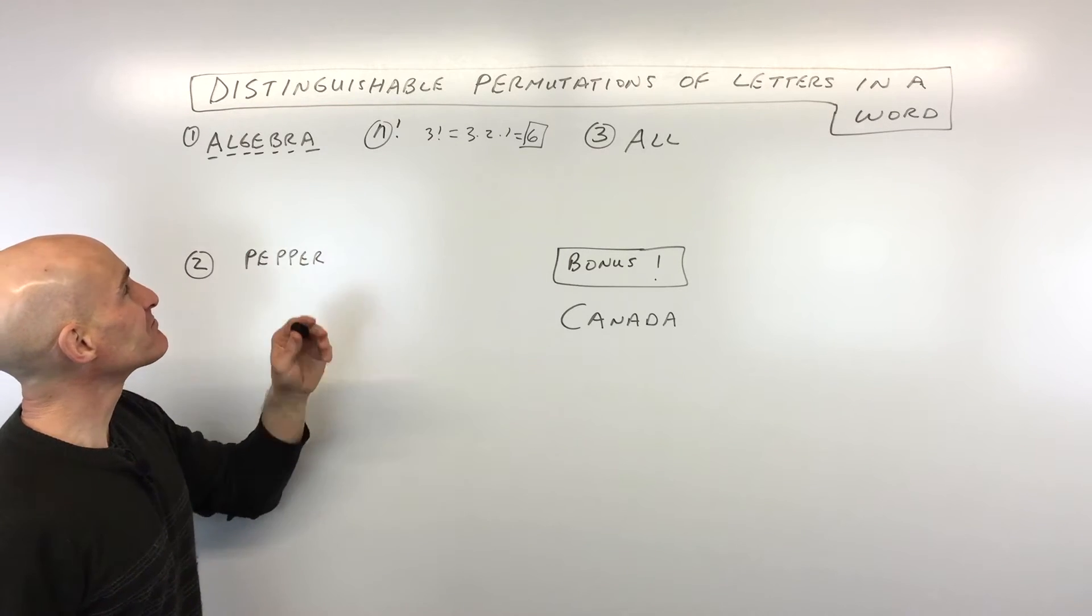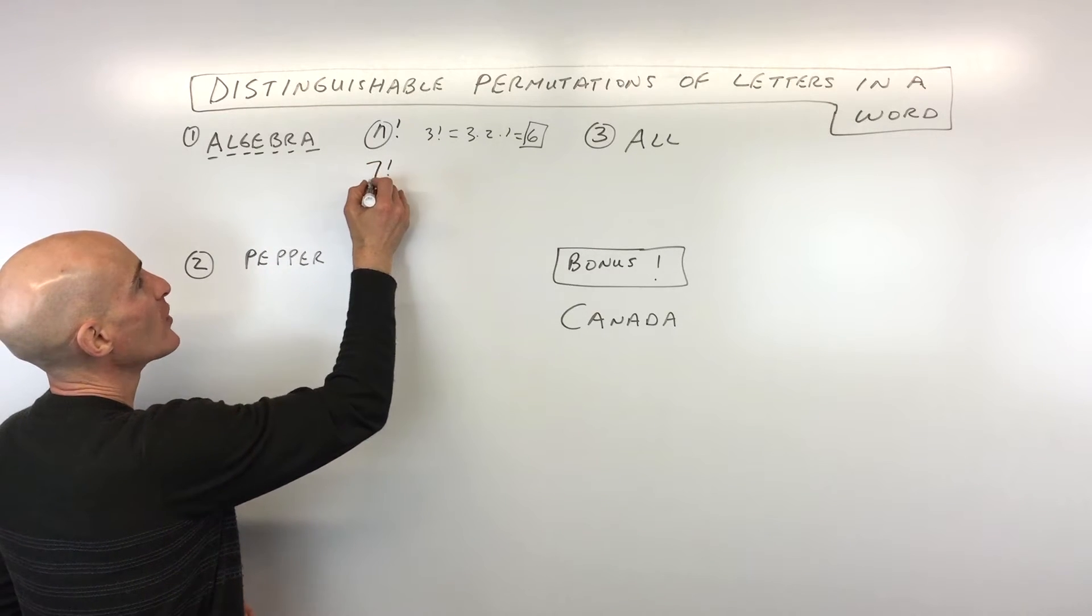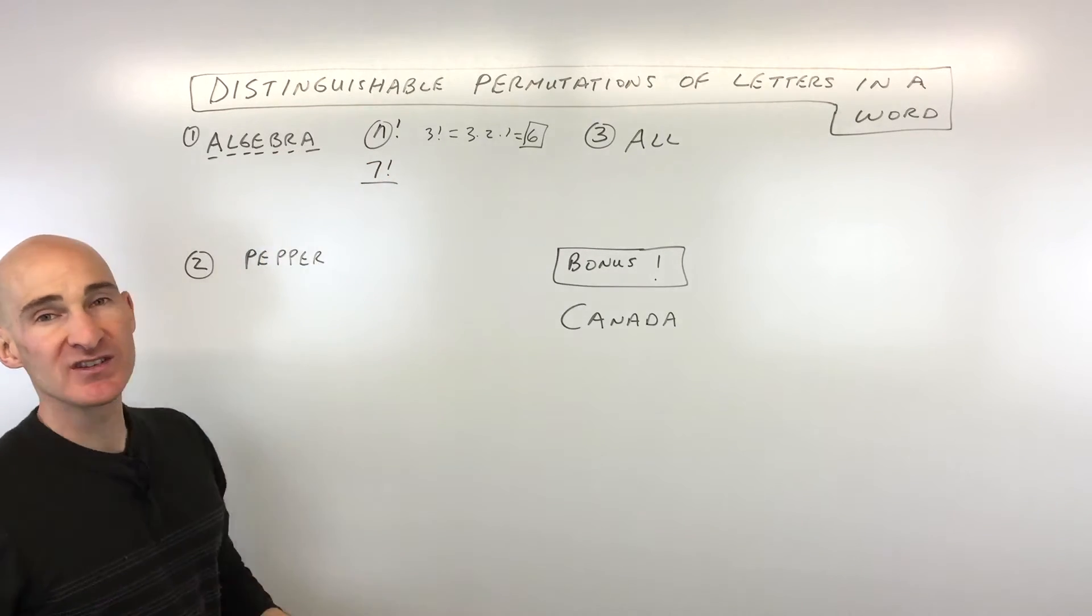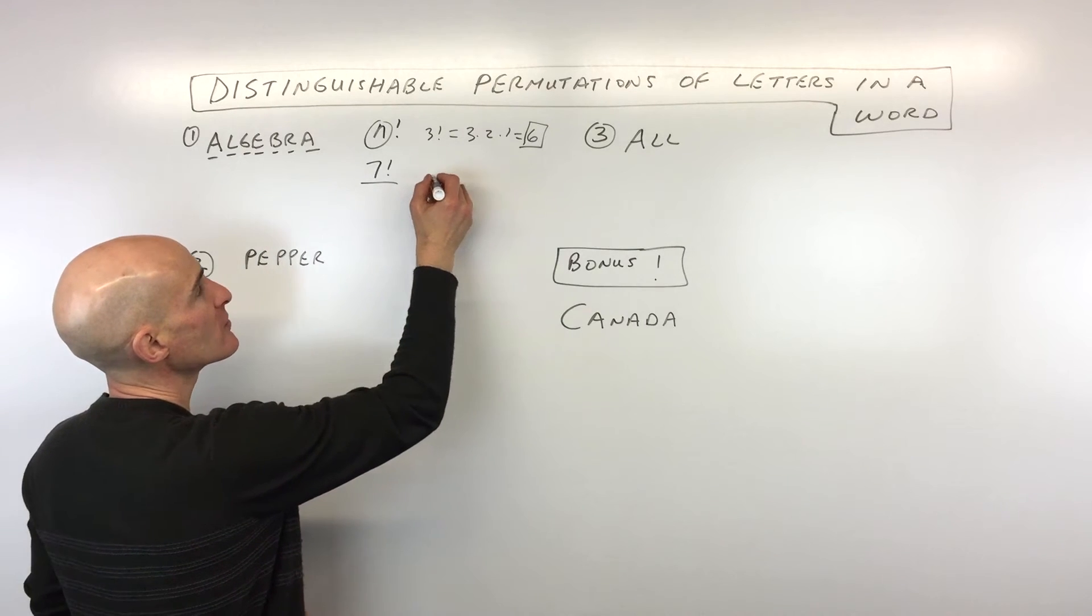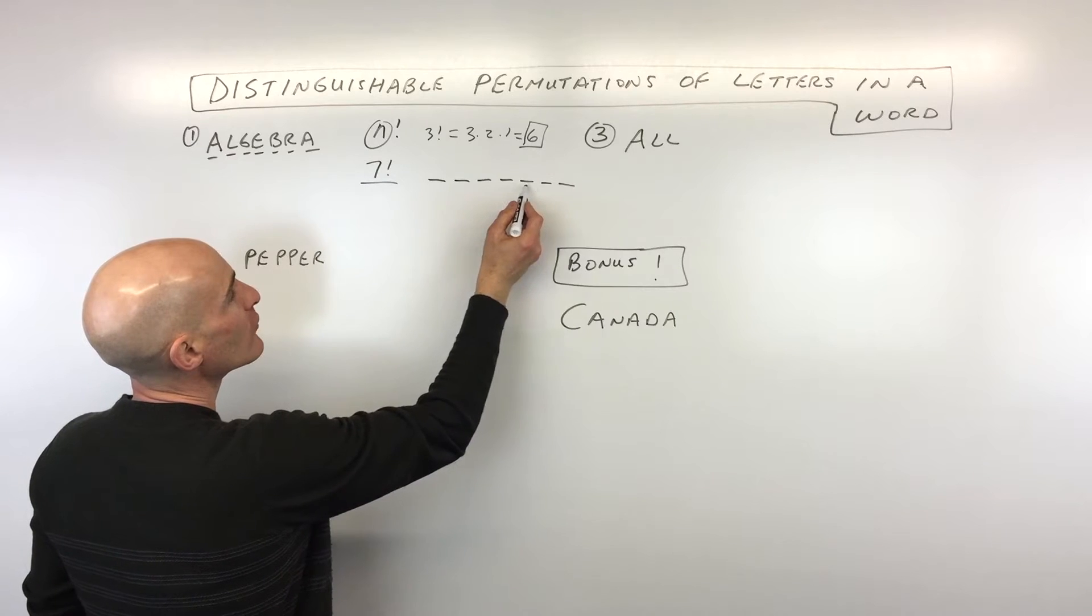Now with algebra, there's seven letters here. So that means that there's going to be seven factorial ways of rearranging these letters. Now, if you want to see it in a more descriptive way, imagine writing it out like this. One, two, three, four, five, six, seven.